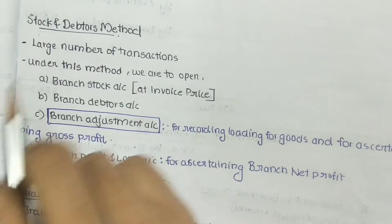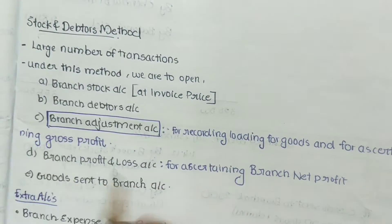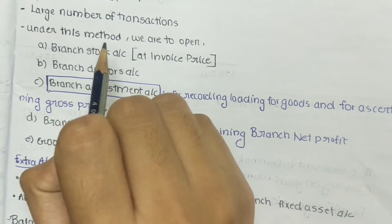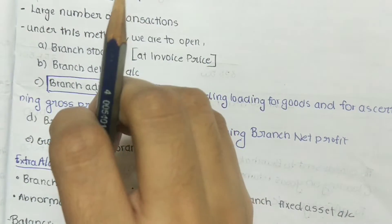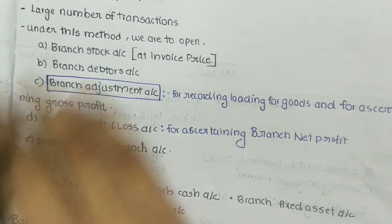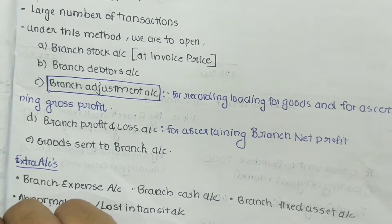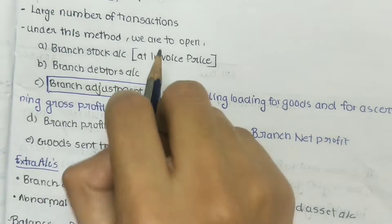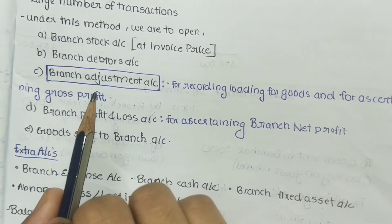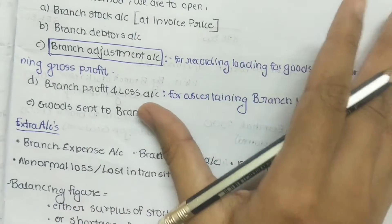Stock and Debtors Method is the third method specified in our CMA study material of Financial Accounting. This method is used by the head office to maintain the books of a branch when there is a large number of transactions. Under this method, there are specific accounts that should be opened.